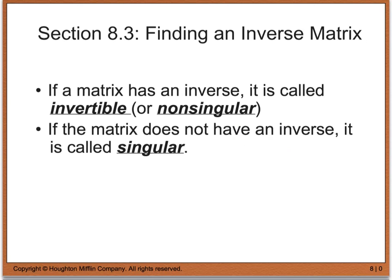A matrix that has an inverse is called either an invertible matrix or a non-singular matrix, and if a matrix does not have an inverse, then it's said to be singular.